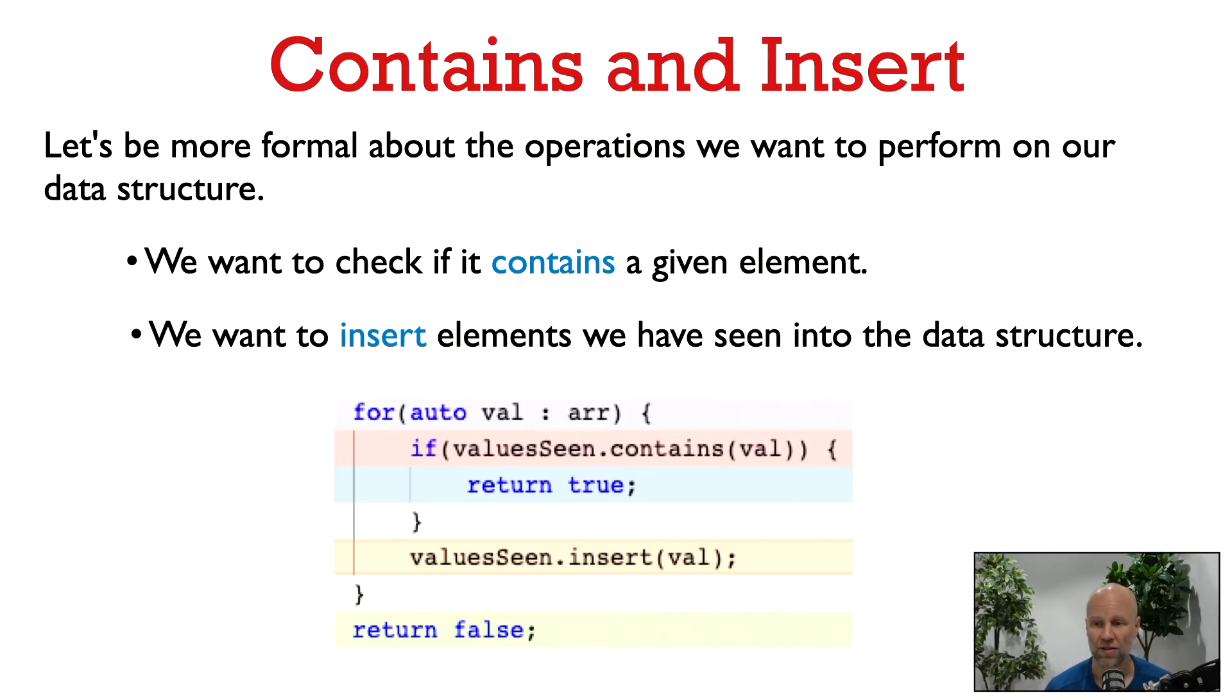So we can rewrite our algorithm in terms of these two primitives. We iterate through the array. For each value, we check if we have already seen it using contains. If we have seen it, then there's a duplicate, and we return true. If we haven't seen it, then we insert it into our data structure. If we finish iterating through all the elements, then there is no duplicate, and we return false.